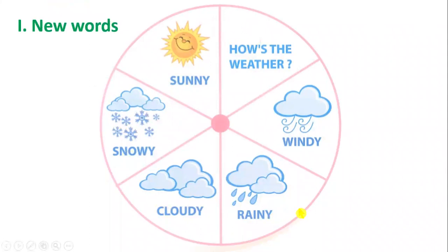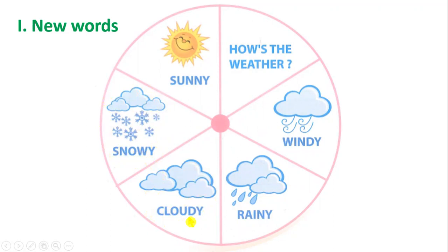Look at the picture on the screen. You will see sunny. Nắng, trời nắng — sunny. Snowy. Trời có tuyết rồi. Cloudy. Trời nhiều mây.